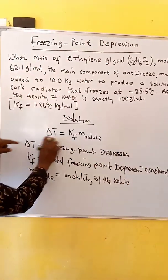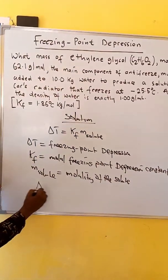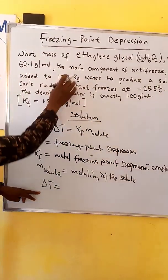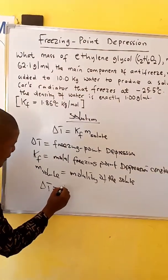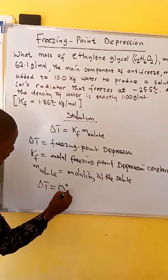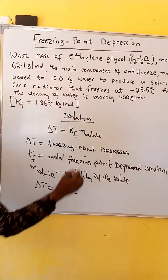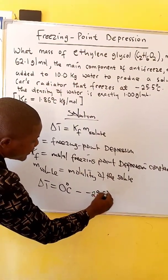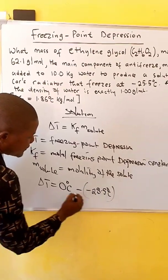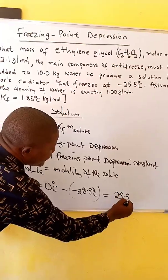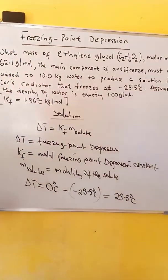We can now calculate delta T. In this case, the freezing point of the solvent water is 0.00 degrees Celsius, and that of the solution is negative 25.5 degrees Celsius. This will give us 25.5 degrees Celsius.